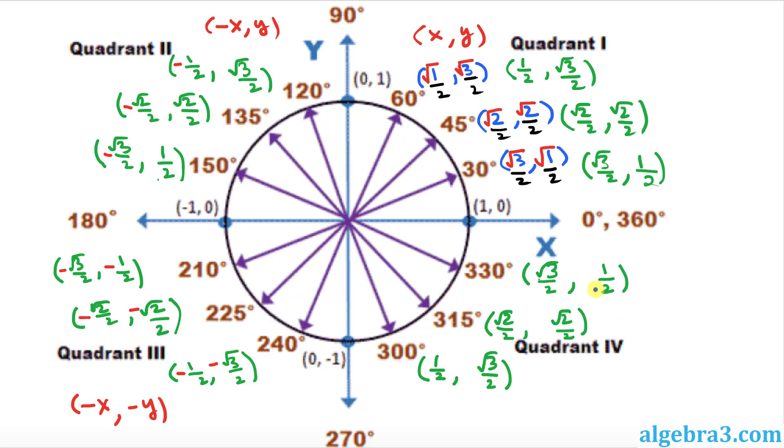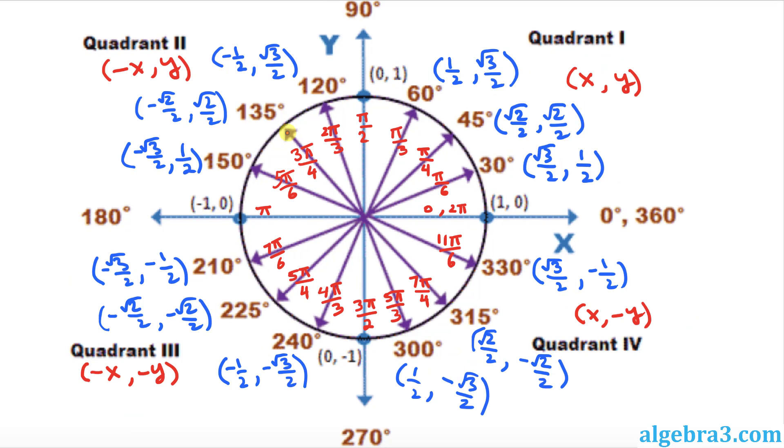And finally, in the fourth quadrant, you can see here we have x is positive, but y is negative. That means the second number in this ordered pair is going to be negative. Over here negative, negative, and negative. And that really completes our unit circle.